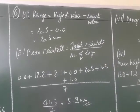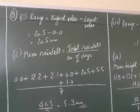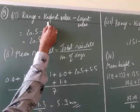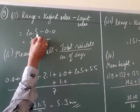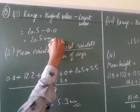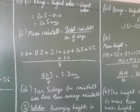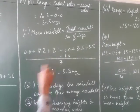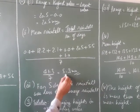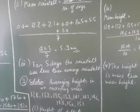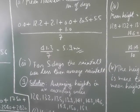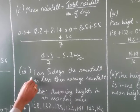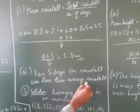Eighth question: rainfall in millimetres in a city on seven days of a certain week was recorded. Range = highest value minus lowest value = 20.5 minus 0.0 = 20.5 millimetres. Mean rainfall = total rainfall divided by 7 days. Mean rainfall was 5.9 millimetres. The rainfall was less than the mean on 5 days.